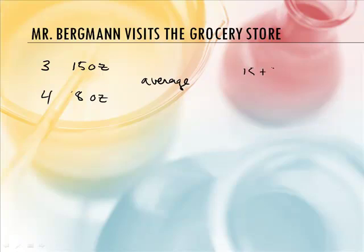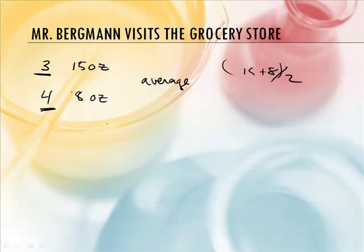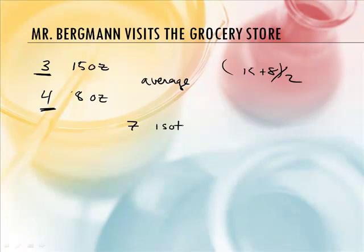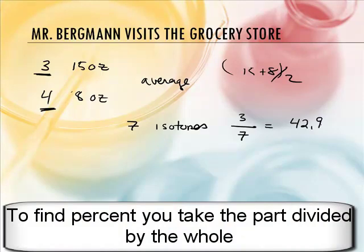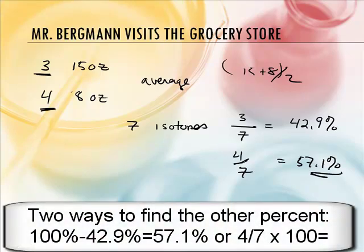Shouldn't I just take 15 plus 8 and divide by 2? Well, you can if you have equal numbers, but we don't — we have three of one and four of another — so we're going to have to do a weighted average. You're going to have to take the mass times the percent. We need to figure out that percentage. If we have seven total, then the 15-ounce size is 3 over 7, which is 42.9%. And 4 over 7 is 57.1%.